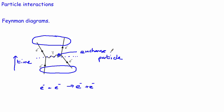To summarise: we've looked at four different types of interactions, used an analogy to understand how they work, identified the four exchange particles for each interaction, developed a method for checking whether interactions can happen using conservation laws, and had a basic introduction to Feynman diagrams. These Feynman diagrams are going to be very important when we look at the weak interaction shortly — we'll extend them just a little bit. Thank you very much for watching and I will see you again soon.